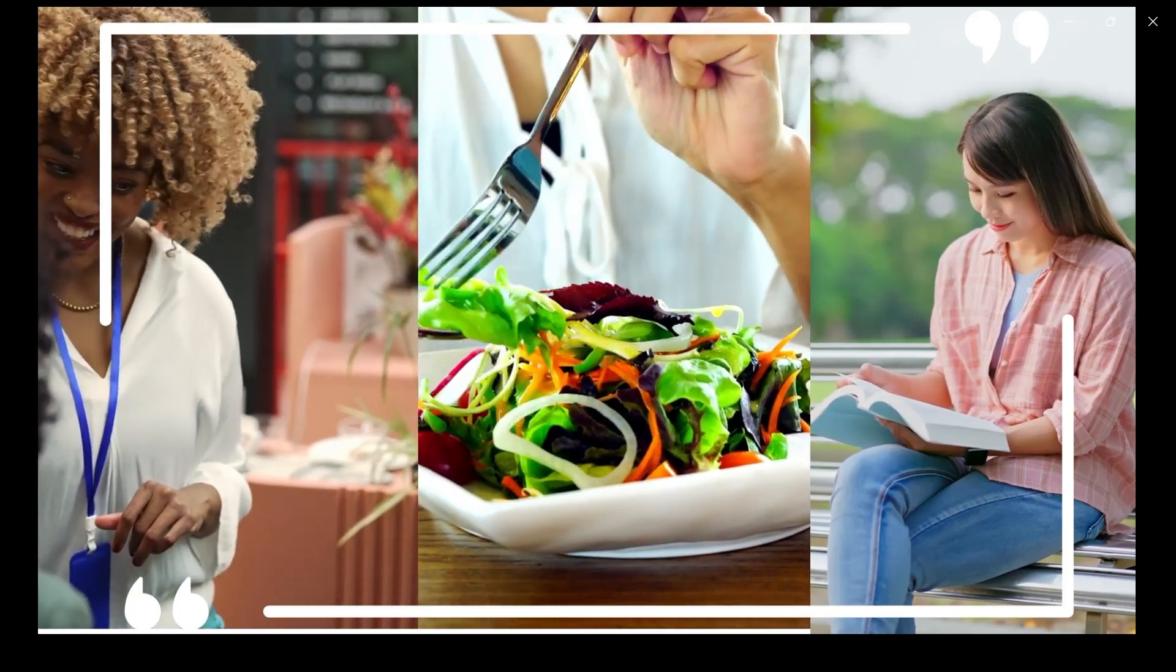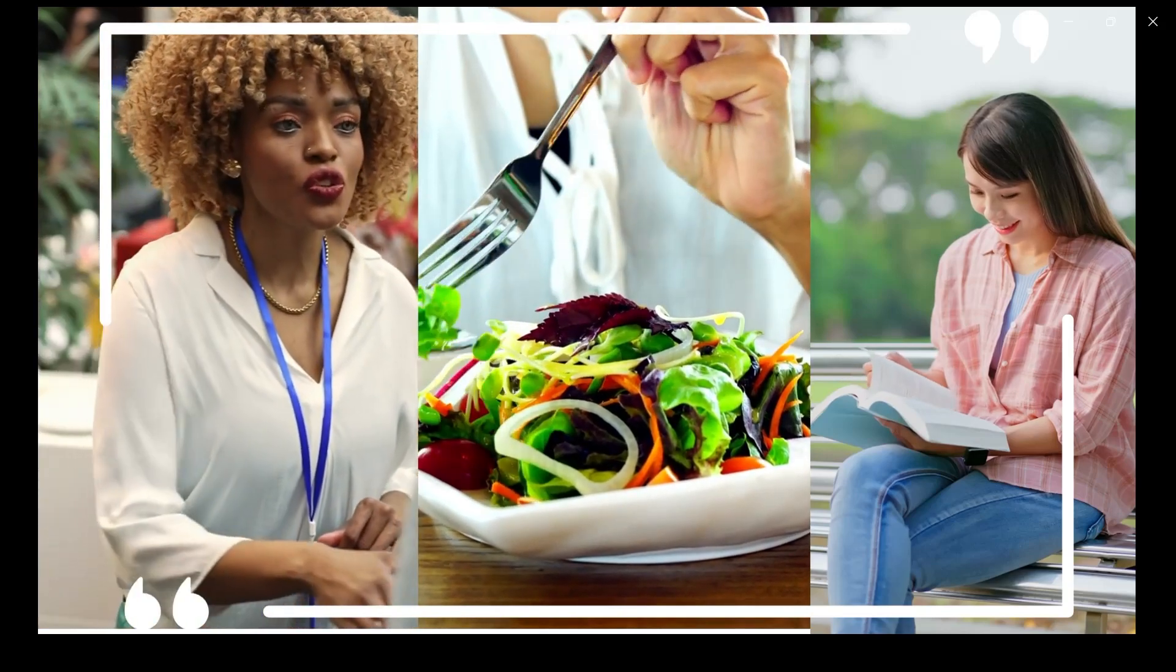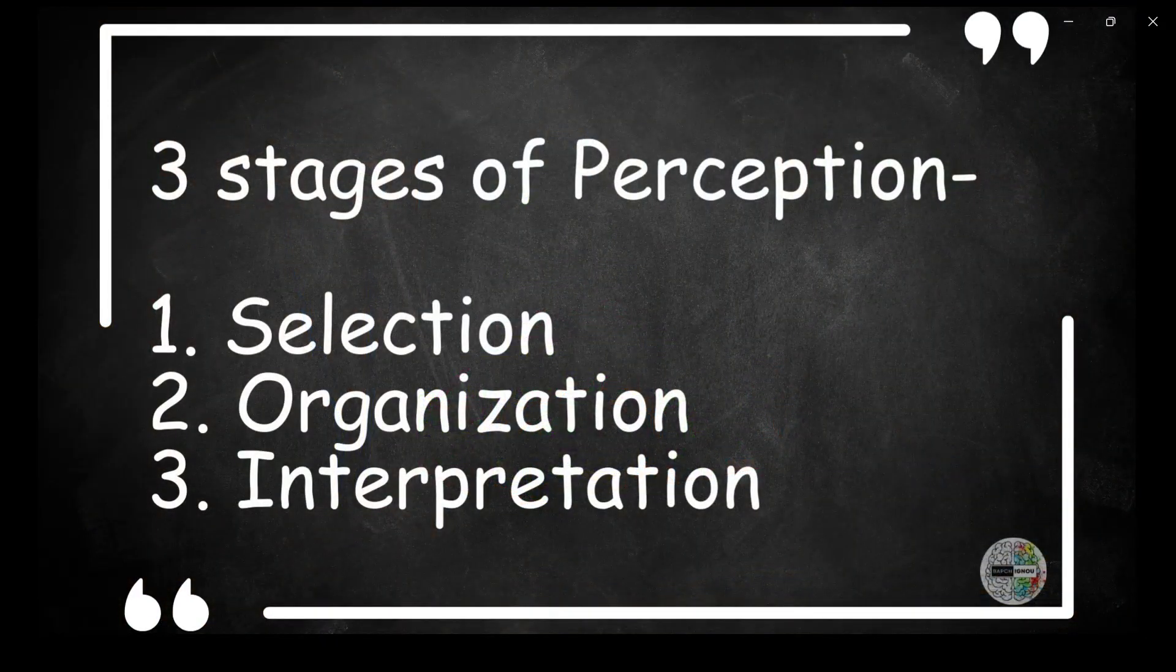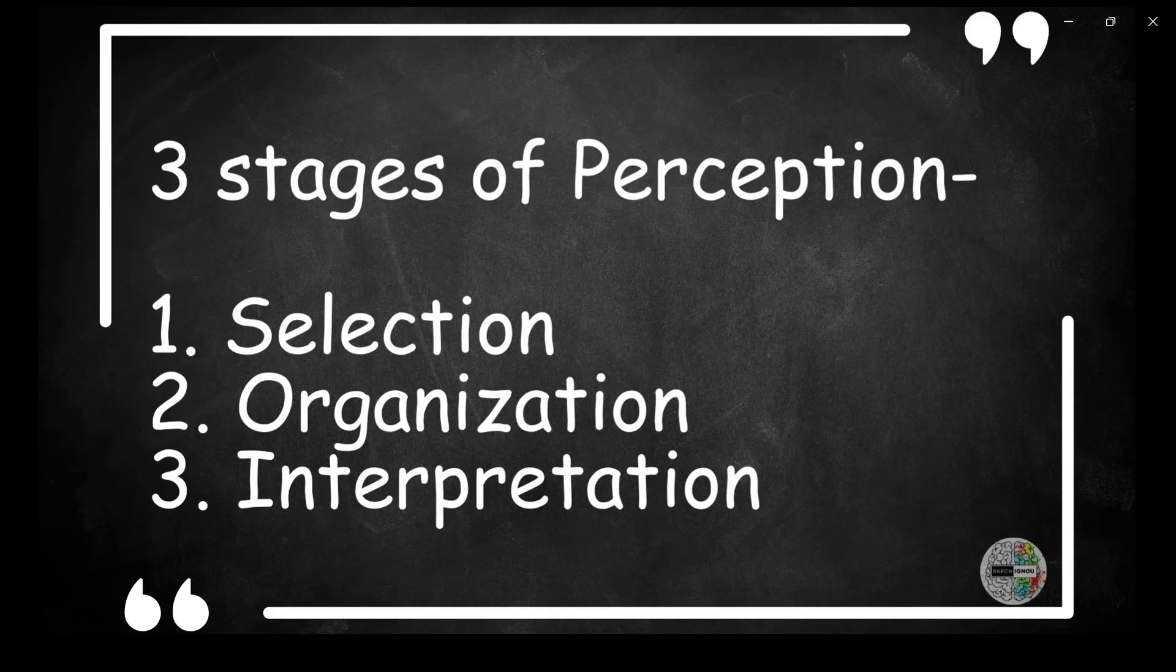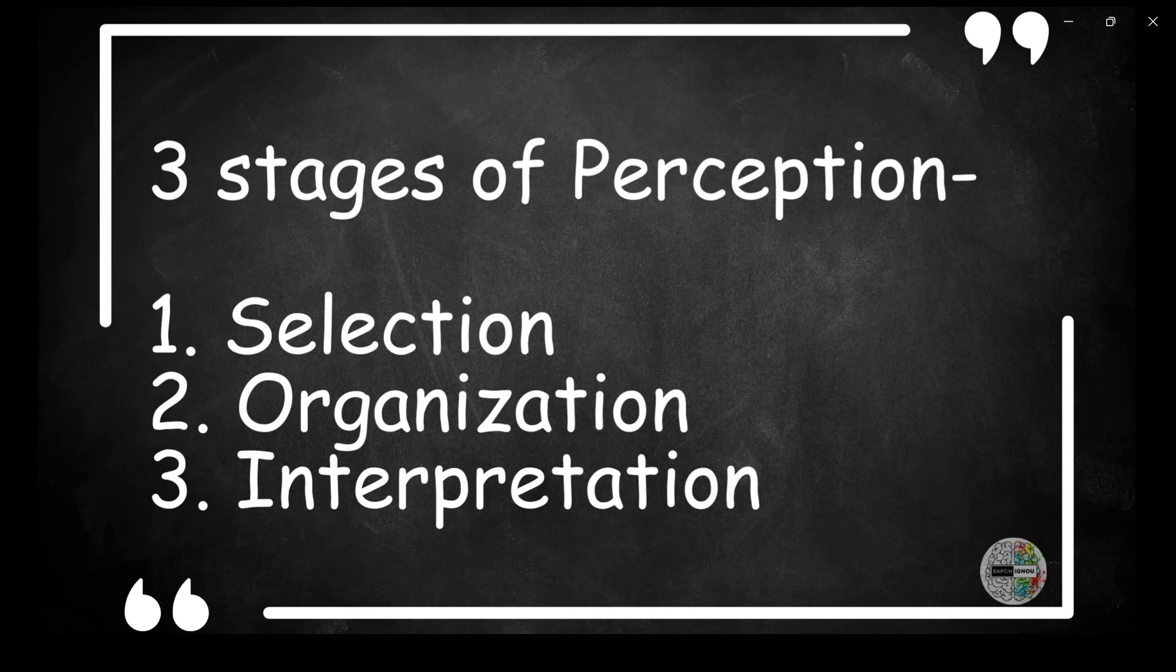This brings us to the process of perception which happens in three stages. Perception involves three stages: selection, organization and interpretation. Let's try to understand the stages by using an example of seeing a friend's face in a crowd.